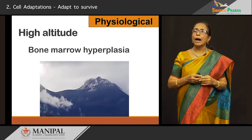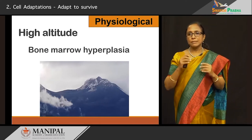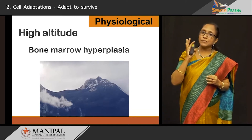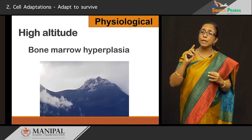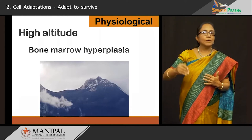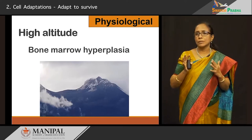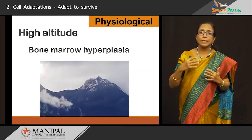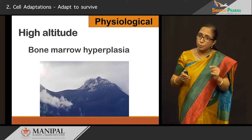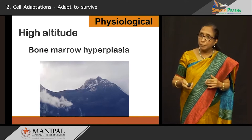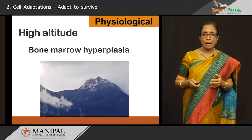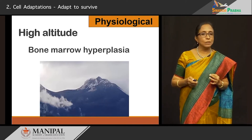Another physiological condition: high altitudes. Tenzing and Hillary conquered Everest — Tenzing is a Sherpa who lives in high altitudes. People in high altitudes have bodies adjusted to hypoxic changes. In these people there is bone marrow hyperplasia — there is hypoxia at high altitudes, so to compensate, bone marrow hyperplasia occurs. The hyperplastic bone marrow hematopoietic cells produce a lot of RBCs, resulting in polycythemia, which is a protective mechanism. This is one more example of physiological hyperplasia.